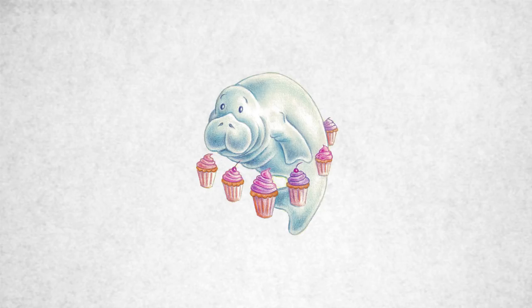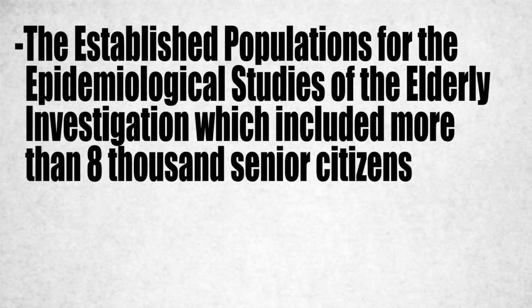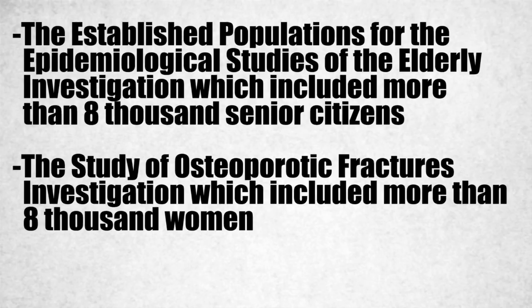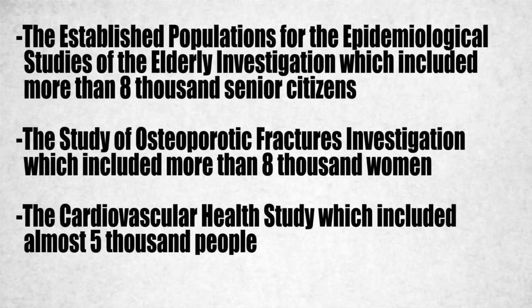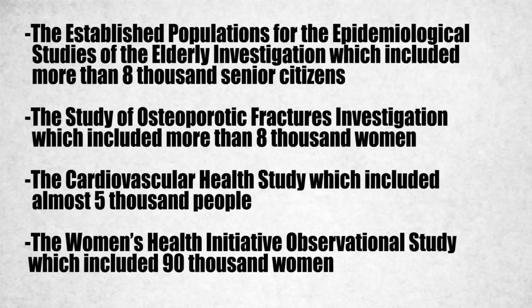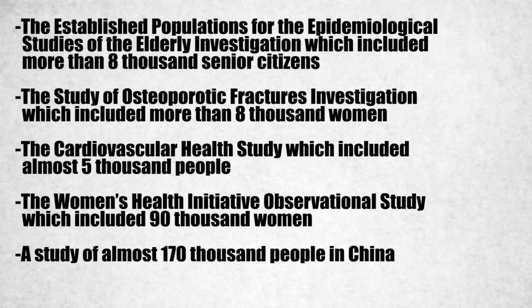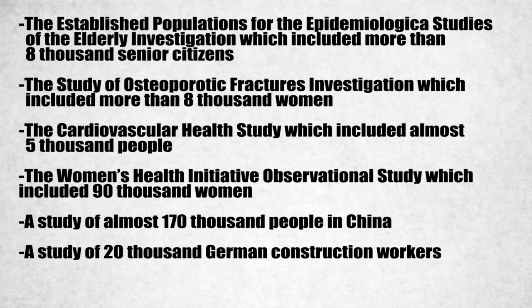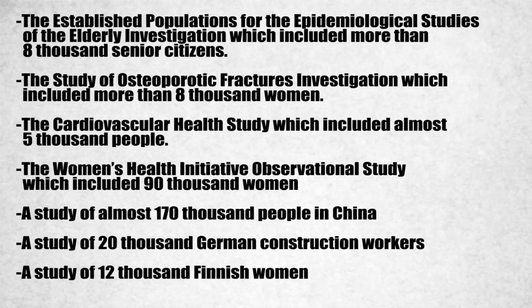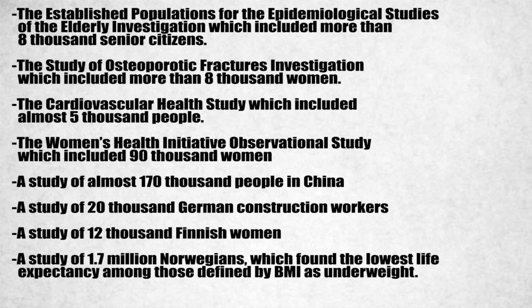In Health at Every Size, Linda Bacon lists the following studies that show that fat people were living as long as, and frequently longer than, so-called normal weight people: the Established Populations for the Epidemiological Studies of the Elderly Investigation, which included more than 8,000 senior citizens; the Study of Osteoporotic Fractures Investigation, with more than 8,000 women; the Cardiovascular Health Study, with almost 5,000 people; the Women's Health Initiative Observational Study, with 90,000 women; a study of almost 170,000 people in China; a study of 20,000 German construction workers; a study of 12,000 Finnish women; and a study of 1.7 million Norwegians, which found the lowest life expectancy among those defined by BMI as underweight.